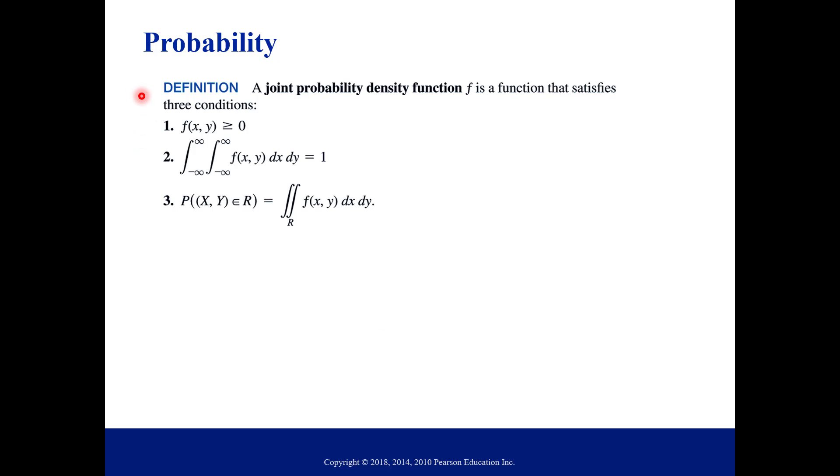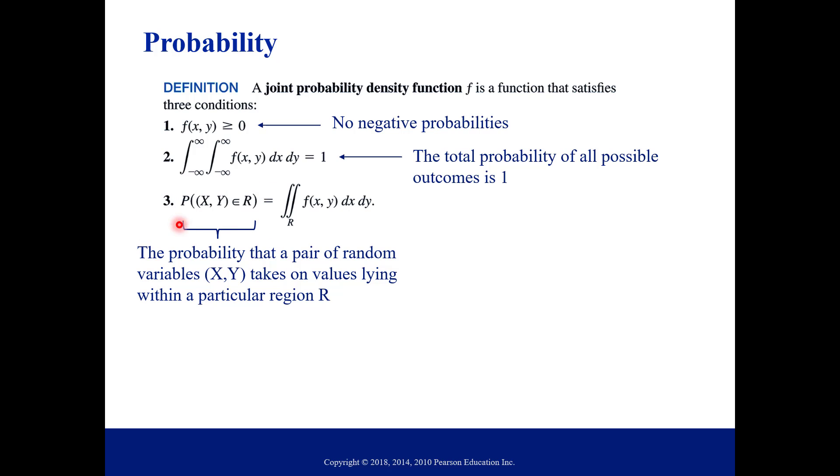Okay, so we're going to talk a little bit about probability, and we'll look at an example for this. So we can use multiple integrals for probability, and a joint probability density function, F, is a function that satisfies all three of these conditions. So the first condition basically just says that your probabilities won't be negative. The second condition is just saying that the total probability of all the possibilities or all possible outcomes is 1. And then the third part here, this is saying that the probability that a pair of random variables, which is the X and the Y, takes on some values within a particular region.